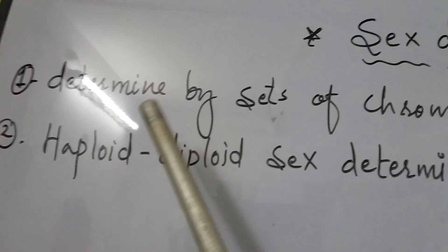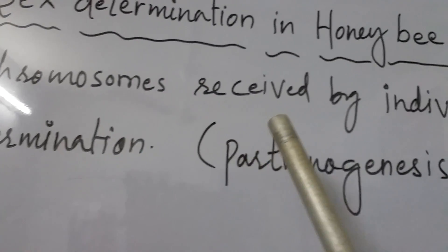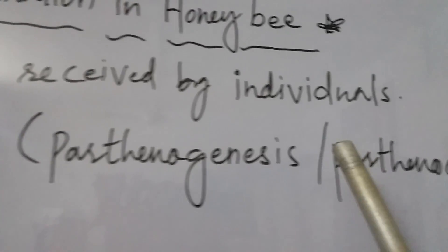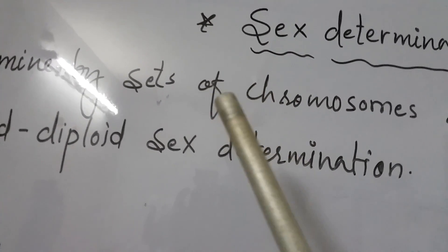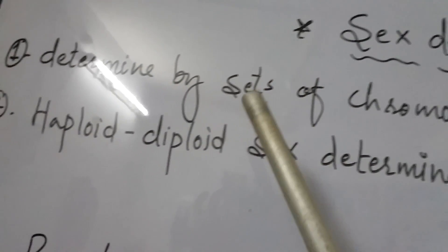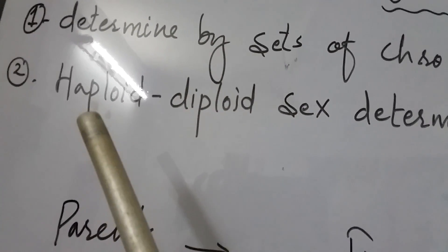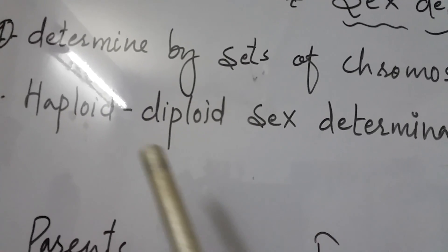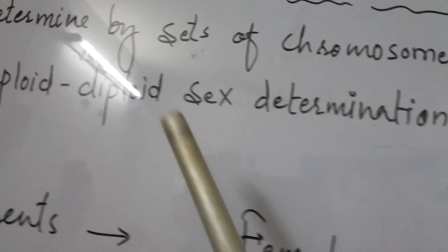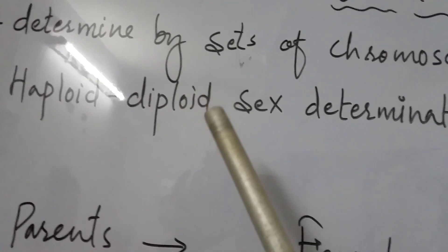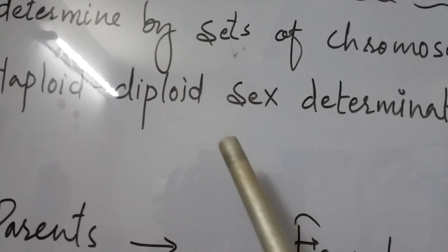In the honeybee, sex is determined by the number of chromosome sets received by the individuals. Different individuals receive different numbers of chromosomes, and on the basis of that chromosome number the sex is decided. This type of sex determination is called haploid-diploid type of sex determination.